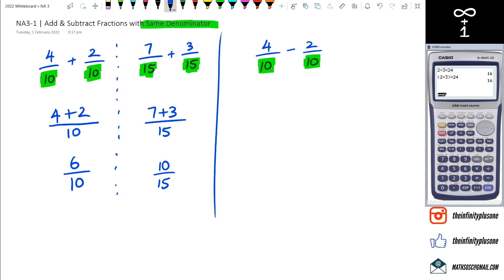And then we'll actually go back to those 6 over 10 and 10 over 15 and show you the simplified fractions. So what about the subtraction? Same thing. Same denominator 10, so what we're going to do is we're going to do 4 minus 2, and that's divided by 10 because 10 is the same denominator. Then we've got 4 minus 2 which is equal to 2, and we don't do anything to the denominators if they're the same, you just leave it as it is, as over 10.